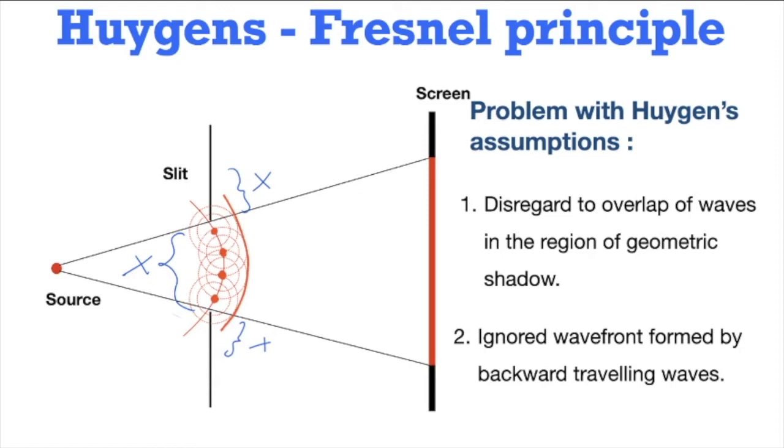The second one was that he ignored the wavefront formed by backward traveling waves. If we consider that a source is spherical and giving out radiation in all possible directions, but while considering construction of the wavefront, he took into account only the forward moving waves. He completely ignored the wavefront which was going backward, so a large part of the wavefront was ignored.